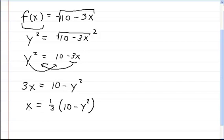Now, at this point, all you have to do is just switch the x's to y's. And you're going to switch all the y's to x's. So this is going to look like this now. Now, y is equal to one-third times 10 minus x squared. And all I did was just switch the y's to x's. And I switched all the x's to y's.